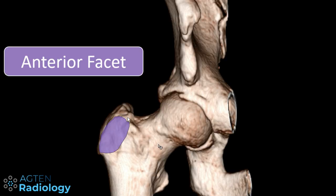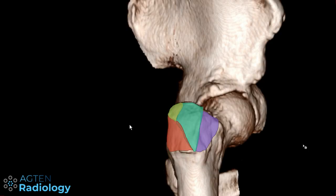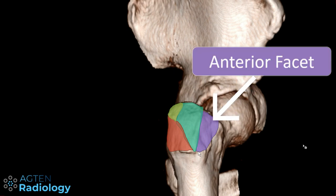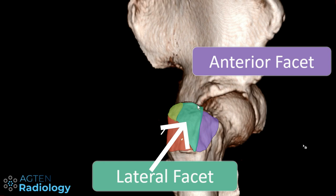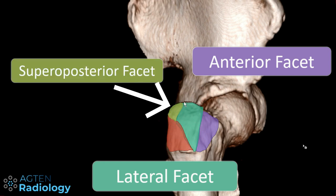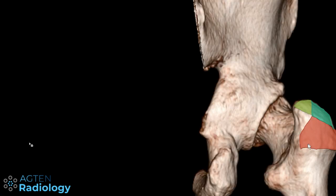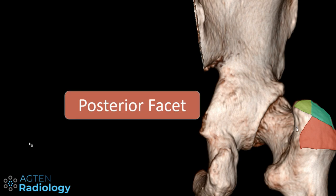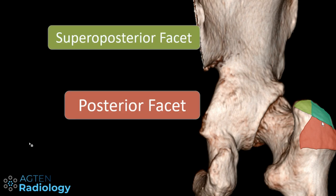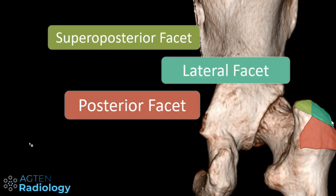In this color you have the anterior facet, which is where the gluteus minimus inserts. On the lateral view you can see the anterior facet, then the lateral facet in darker green, up here is the supraposterior facet, and in red we have the posterior facet. In the posterior view we again have the posterior facet, the supraposterior facet, and part of the lateral facet.